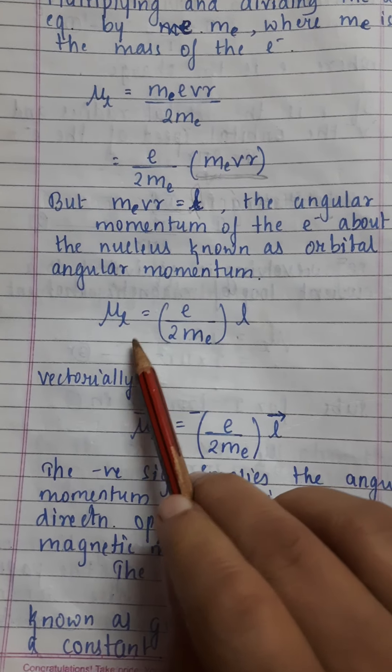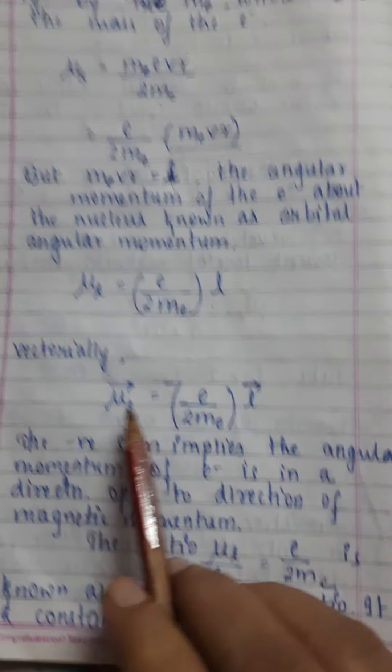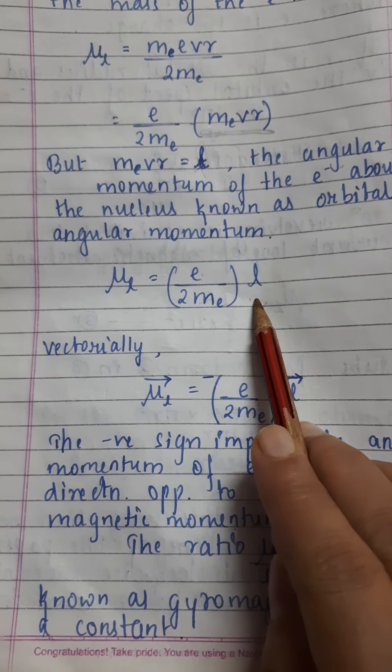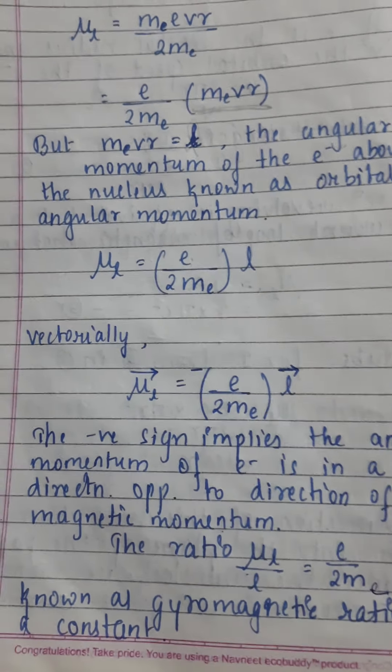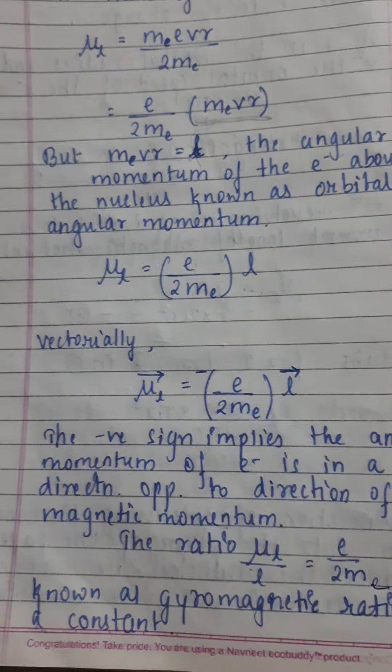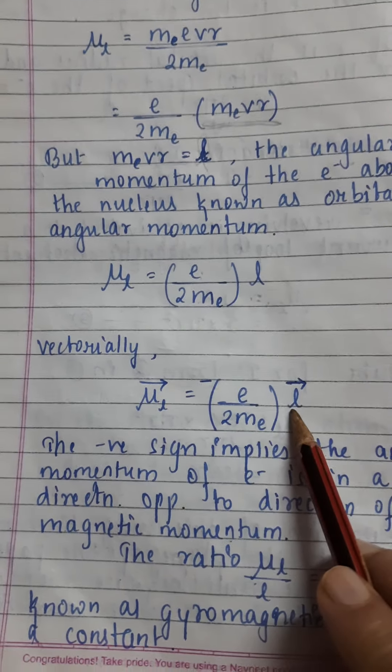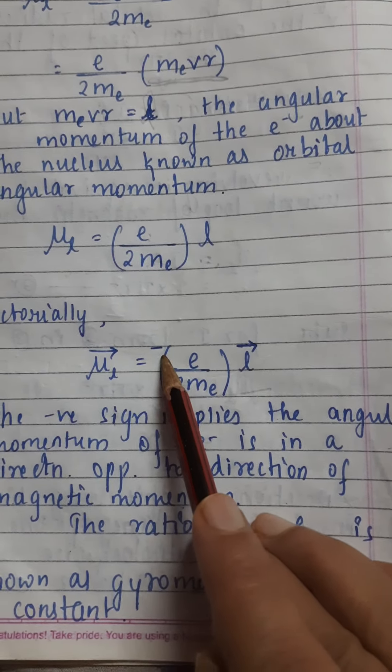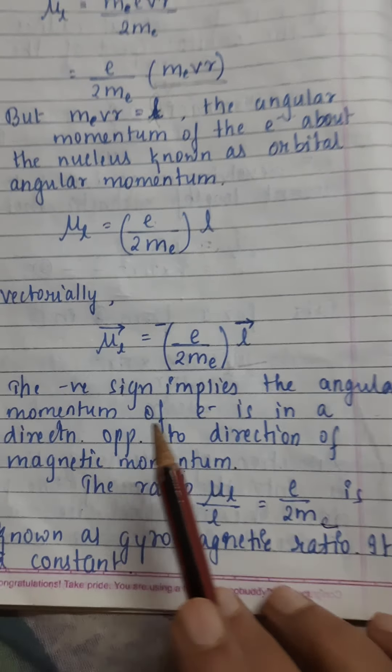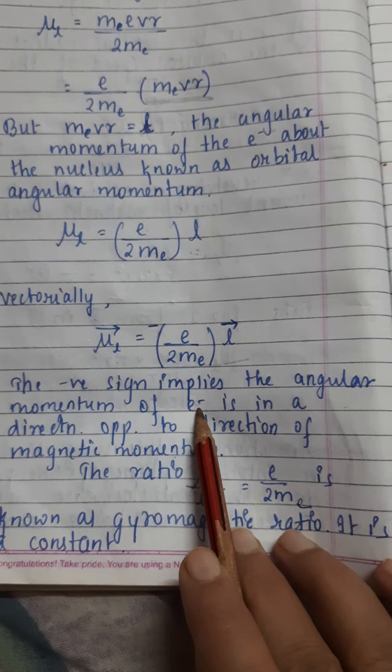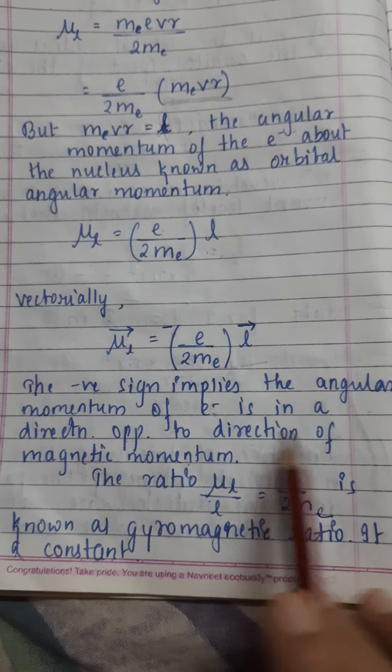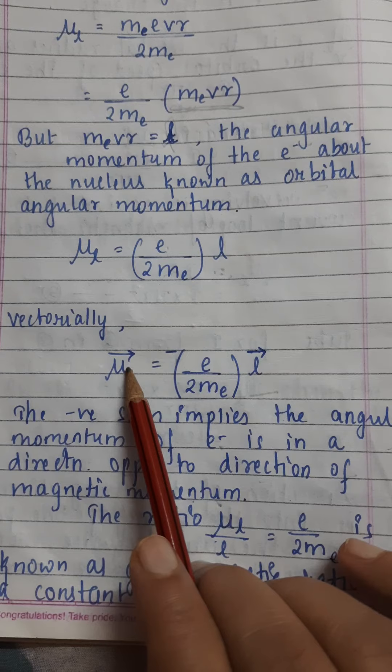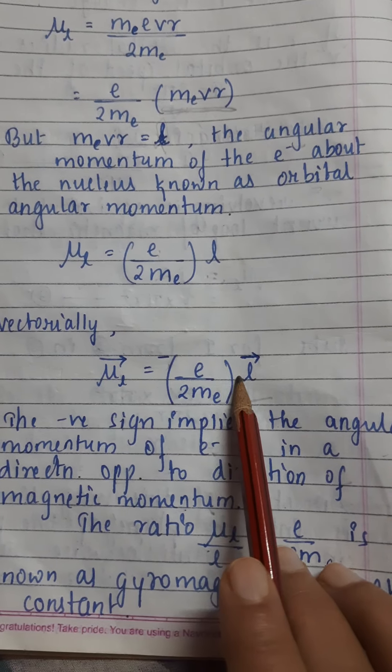In vector notation, since e and me are constants and angular momentum has direction, this will be a vector, and μl is also a vector. There is a negative sign because the angular momentum of e is in the opposite direction of magnetic moment. The magnetic moment direction is into the plane of paper, while the angular momentum direction is out of the plane.